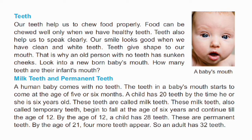Milk teeth and permanent teeth. A human baby comes with no teeth. The teeth in a baby's mouth start to come at the age of 5 or 6 months. A child has 20 teeth by the time he or she is 6 years old. These teeth are called milk teeth, also called temporary teeth. They begin to fall at the age of 6 years and continue till the age of 12.